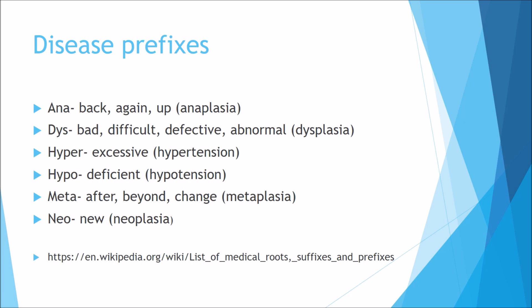Disease prefixes appear at the beginning of a name to give a rough idea of what's happening. 'Ana-' means back, again, or up — for example, anaplasia. 'Dys-' means bad, difficult, defective or abnormal — for example, dysplasia. 'Hyper-' means excessive, such as hypertension meaning high blood pressure; 'hypo-' means deficient, such as hypotension meaning low blood pressure. 'Meta-' means after, beyond or change — examples include metaplasia and metastasis. 'Neo-' means new — for example, neonatal means newborn and neoplasia means new growth. A full list of prefixes and suffixes is available on Wikipedia.